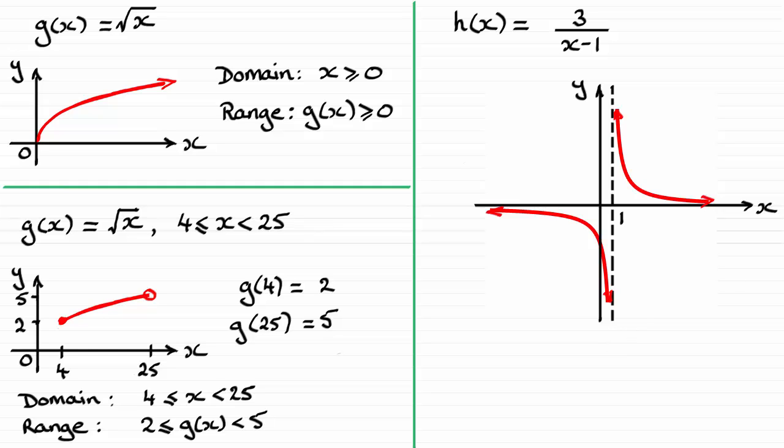So when it comes to the domain and the range, what have we got? Well, the domain is going to be all x values, all real values, except x equals 1. You cannot put 1 into here because you'll end up with 3 divided by 0, which is undefined. So our domain then is written that x is any real number except 1. So we say x does not equal 1.